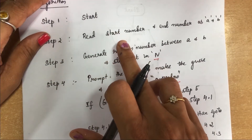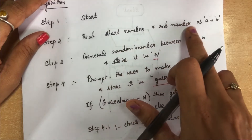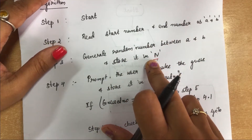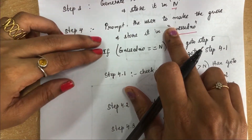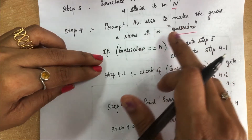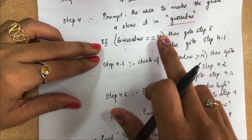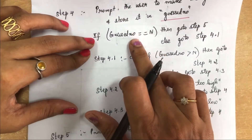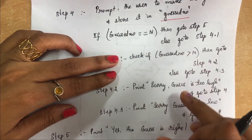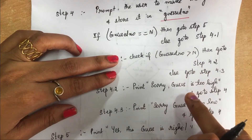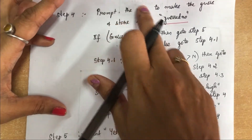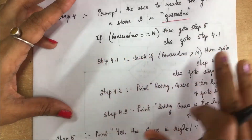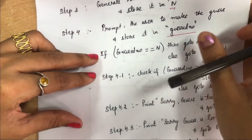To summarize the algorithm: get the start, read starting and ending numbers, ask the computer to generate a random number, prompt the user to guess and store it in guessed_number, compare with N. If equal, print 'Guess is correct.' If not, check whether it is greater or less than N — print 'Too high' or 'Too low' accordingly and go back to Step 4. Here we use an iteration concept to repeat the same set of statements multiple times.